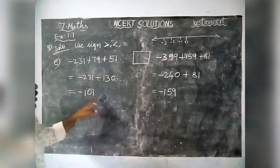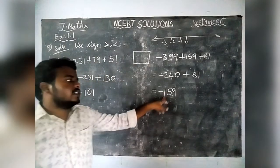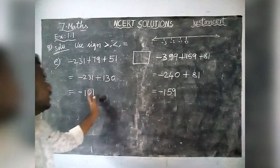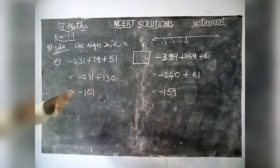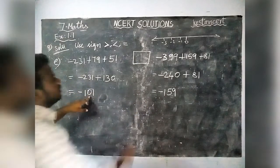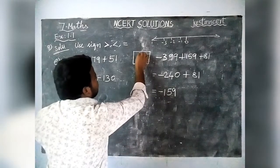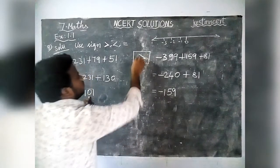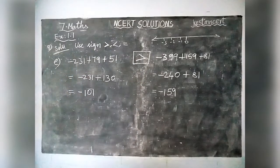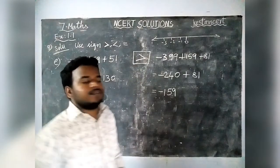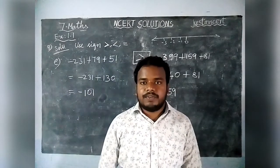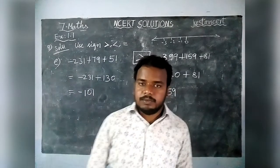Now comparing: left hand side is minus 101, right hand side is minus 159. Minus 101 is the greatest number, so we use the greater than symbol. Thank you, students, for watching. Kindly share and subscribe with your friends. Thank you.